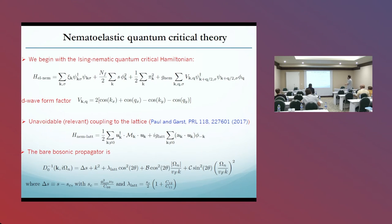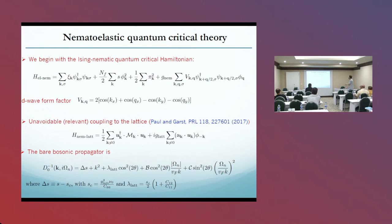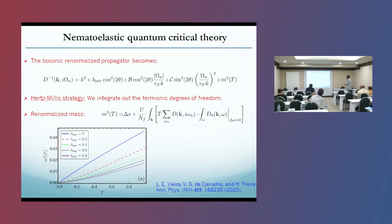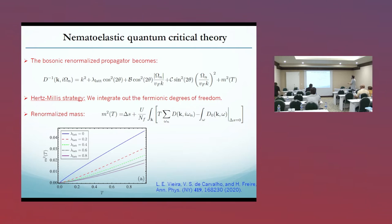This is a relevant coupling. Once we do that, we can calculate everything. Here I show the bare bosonic propagator. Lambda lattice is proportional to the coupling G lattice — this is the nematoelastic coupling. We can also calculate the bosonic renormalized propagator. One thing I want to emphasize is that m-squared here is the bosonic mass.